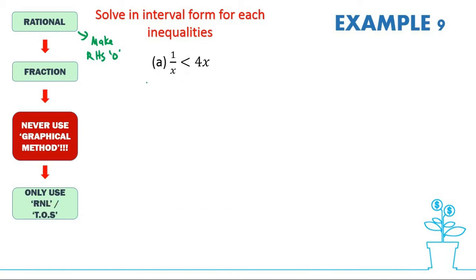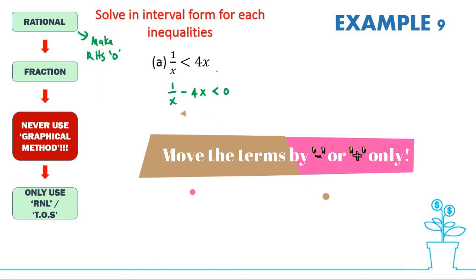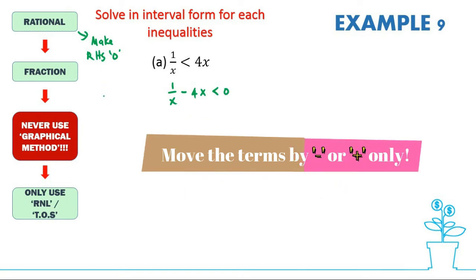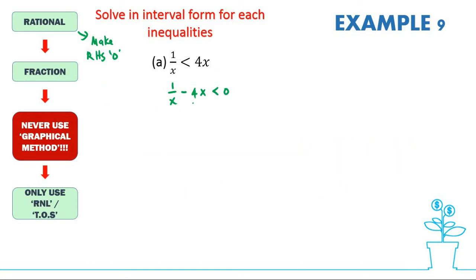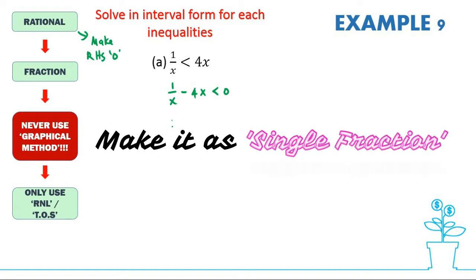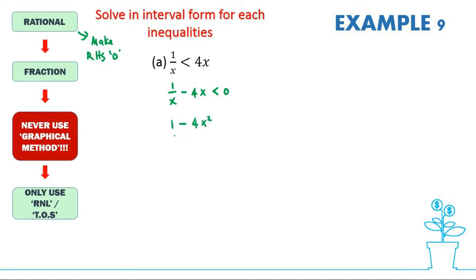Since you don't know the sign of x, make the RHS zero by moving the 4x to the left, so that should be minus 4x less than zero. Next, make it a single fraction — you would have 1 minus 4x squared over x, all less than zero.